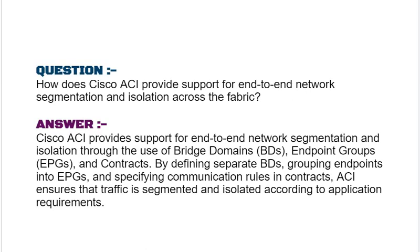Our next interview question is: how does Cisco ACI provide support for end-to-end network segmentation and isolation across the fabric? Your answer should be: Cisco ACI provides support for end-to-end network segmentation and isolation through the use of bridge domains BDs, endpoint groups EPGs, and contracts. By defining separate BDs, grouping endpoints into EPGs, and specifying communication rules in contracts, ACI ensures that traffic is segmented and isolated according to application requirements.